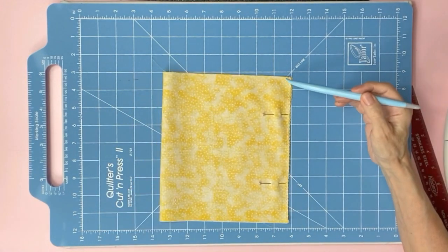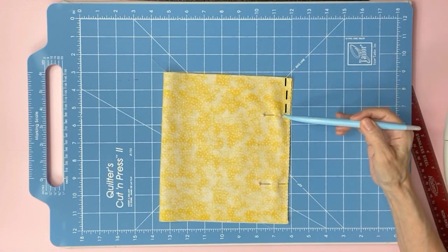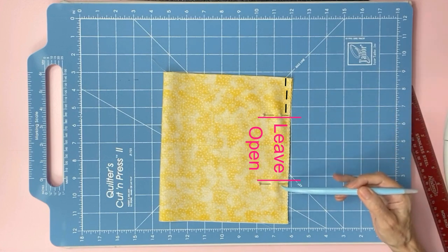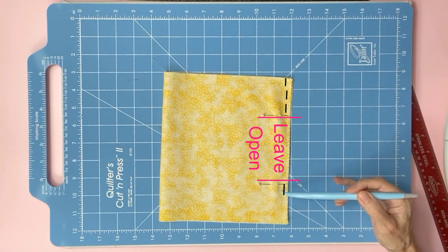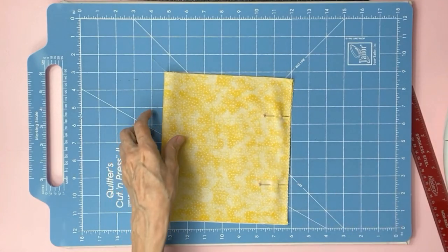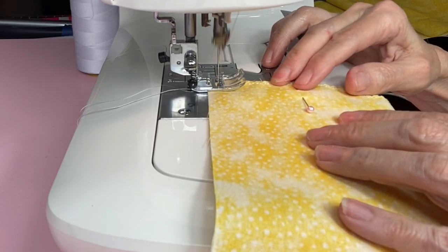Take it to the sewing machine. Start here and stop. Go past the opening and start here and stop. Sew a quarter inch from the edge.